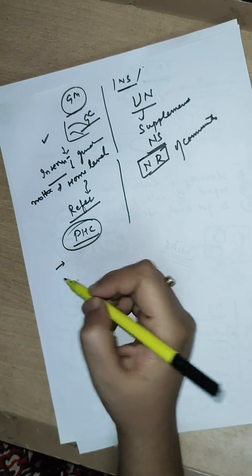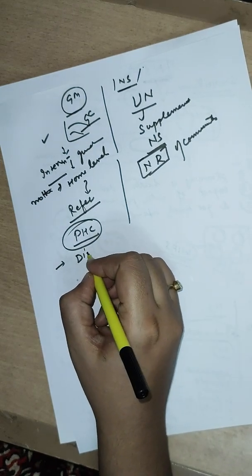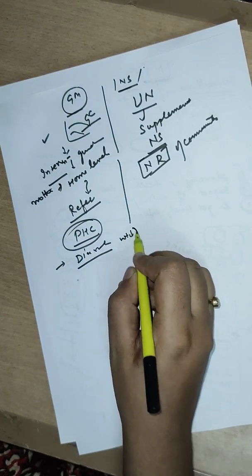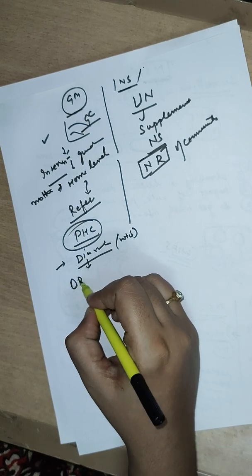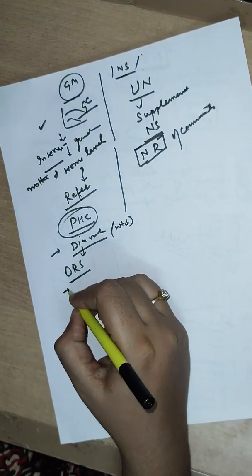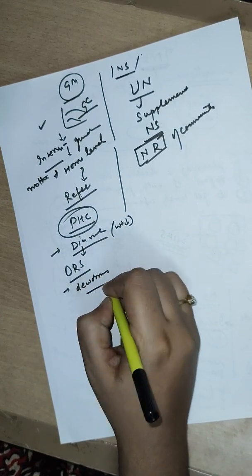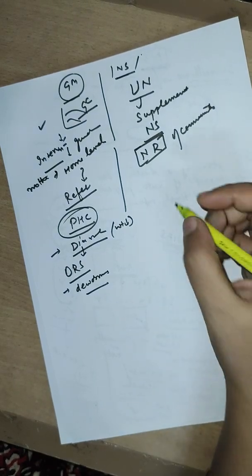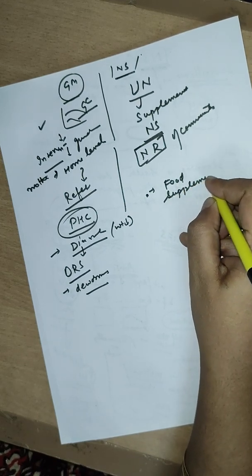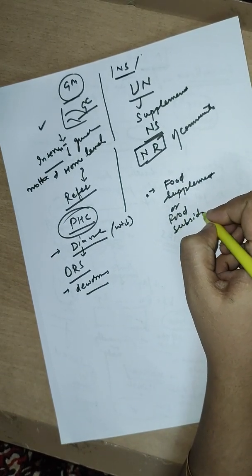In growth monitoring, the major focus lies on primary health care — we look out for the reasons why the child is not growing properly and take interventions accordingly. For example, if a child has diarrhea causing low weight, we can give ORS; if the child has anemia due to worms, we can give deworming with albendazole. Interventions are taken accordingly. But in nutritional surveillance, the main agenda is to provide food supplements or food subsidy to the community.